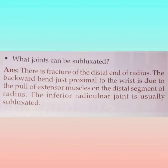Which joints can be subluxated? There is a fracture of the distal end of the radius. The backward band just proximal to the wrist is due to the pull of the extensor muscles on the distal segment of the radius.